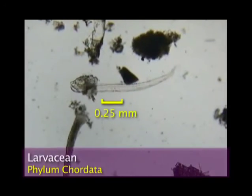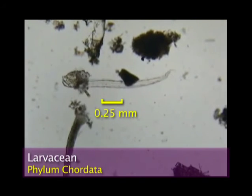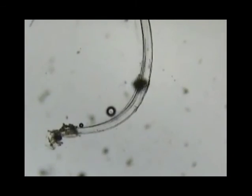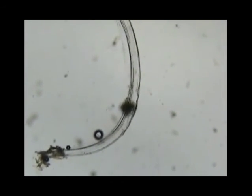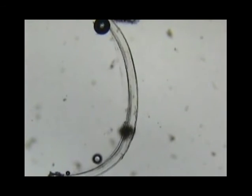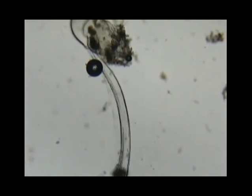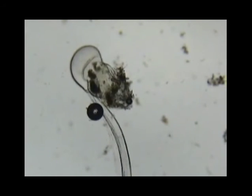You might see a long, clear, tadpole-like creature. This is a type of chordate called a larvacean. In nature, it surrounds its body with a bubble of mucus that it creates.